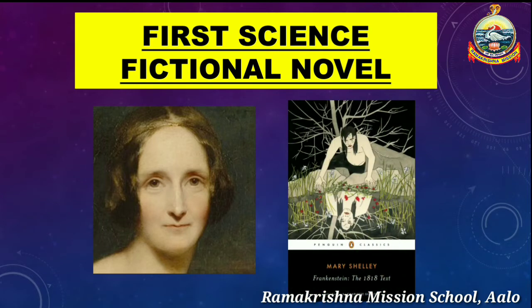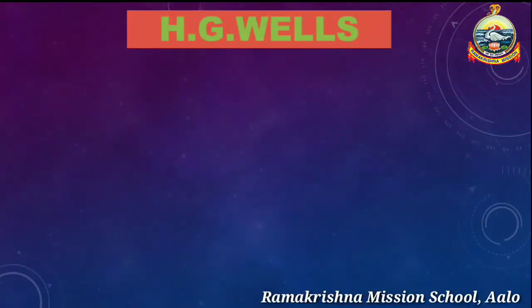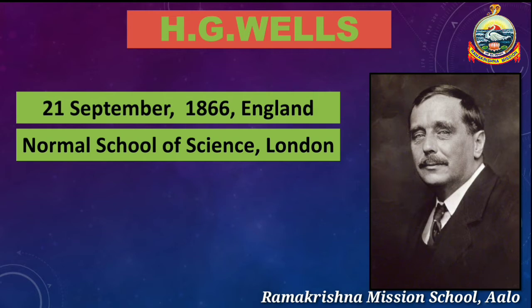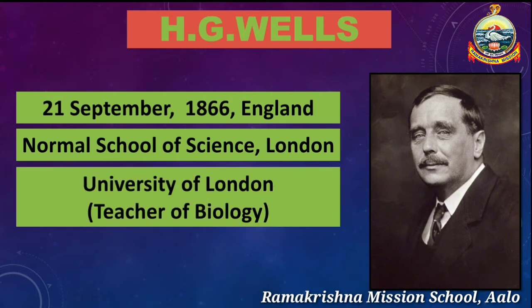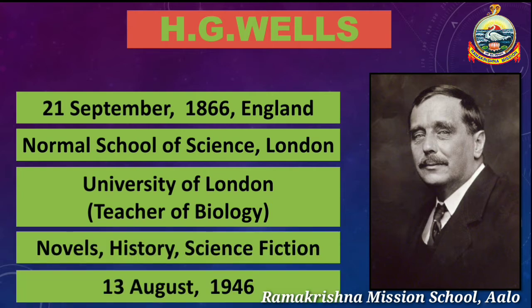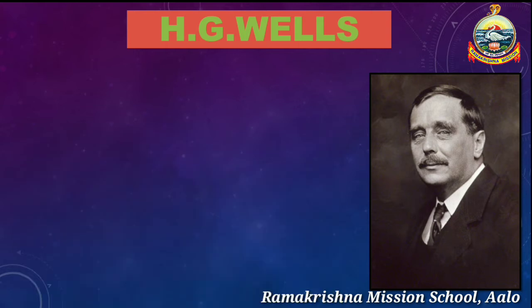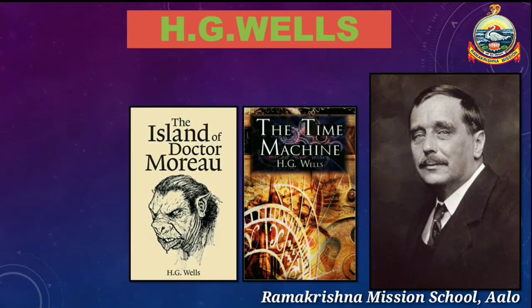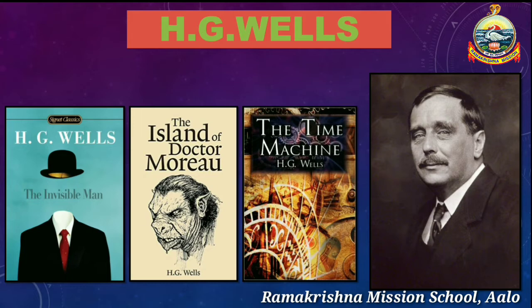Let us know something about our author H.G. Wells. He was born on 21st September 1866. He had to change several schools during his childhood, but many years were spent in the National School of Science in London. He became a teacher of biology at the University of London. He was a prolific writer of novels, history, and science fiction. He passed away on 13th August 1946. His three major science fiction novels were The Time Machine, The Island of Dr. Moreau, and The Invisible Man.